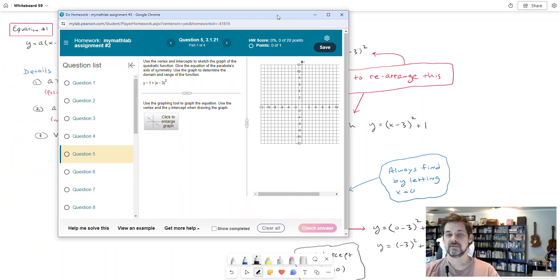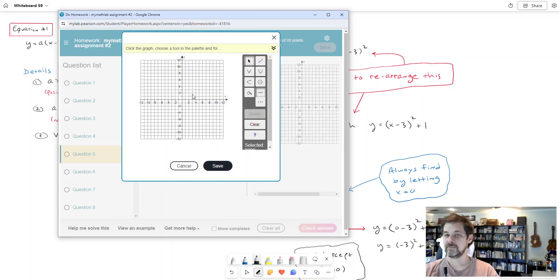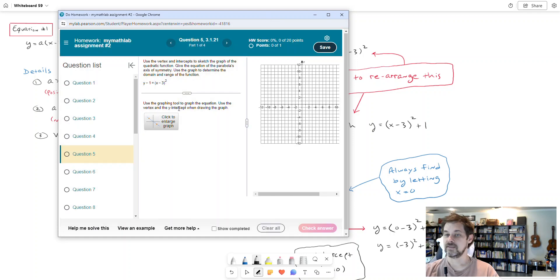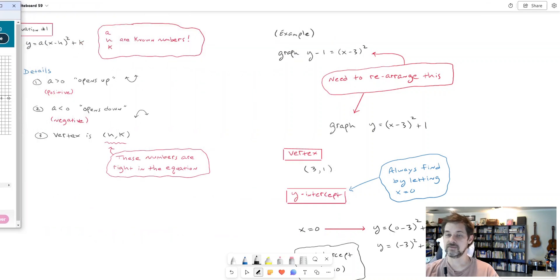Now, as far as it's saying, use the vertex and the y-intercept. So when I go over here and I use the graphing tool, I'm going to have to plot some points and these are the points that it says to use. So I'll do it that way. First of all, the vertex, that'll be easy to find because if my equation is y equals a times x minus h squared plus k, the vertex is h and k.